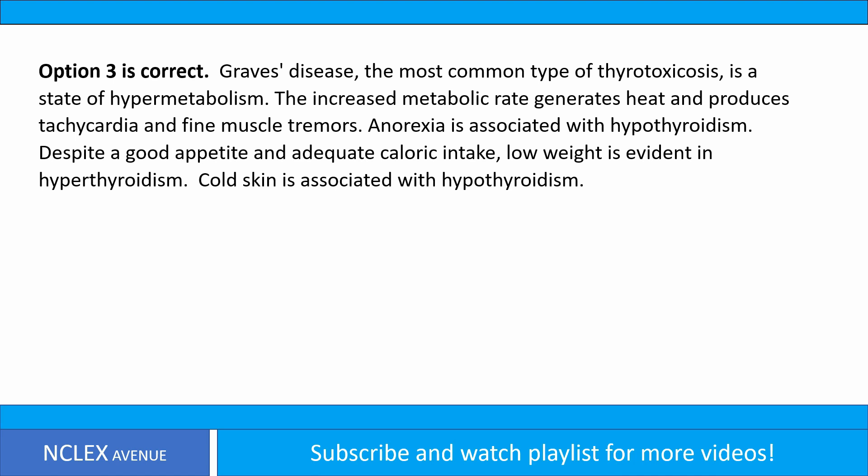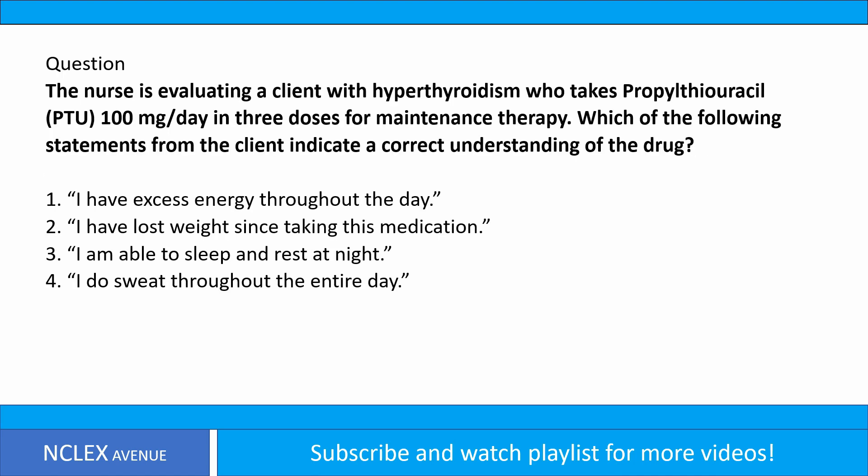Question. The nurse is evaluating a client with hyperthyroidism who takes propylthiouracil, PTU, 100 mg per day in 3 doses for maintenance therapy. Which of the following statements from the client indicates a correct understanding of the drug? 1. I have excess energy throughout the day. 2. I have lost weight since taking this medication. 3. I am able to sleep and rest at night. 4. I do sweat throughout the entire day.